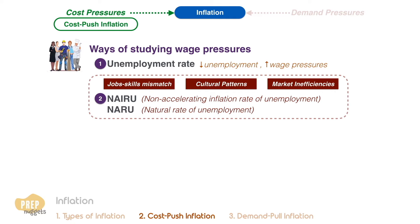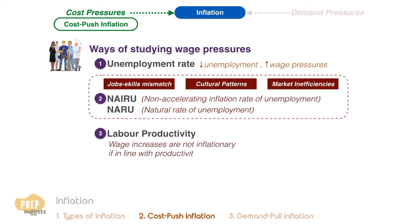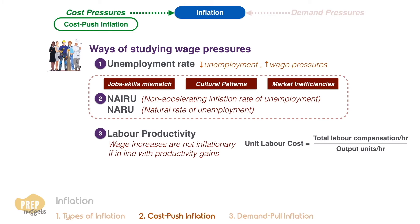Besides NIRU or NAIRU, analysts can use data on labor productivity to identify signs of potential wage pressure. Wage increases are not inflationary as long as they remain in line with gains in productivity. A useful indicator of wages and benefits in terms of productivity is unit labor costs — the ratio of total labor compensation per hour to output units per hour.